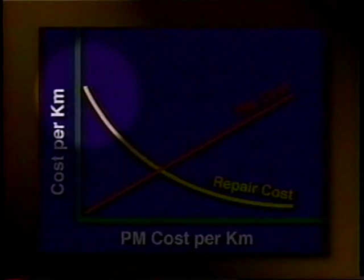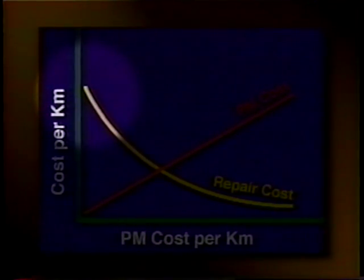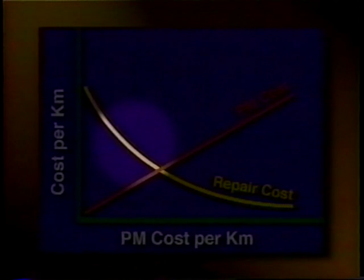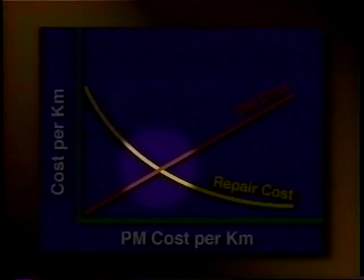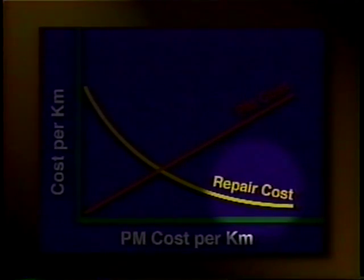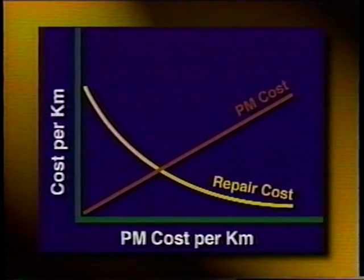This graph shows that a low level of PM will result in high repair costs and high total costs. As the level of effort for PM is increased, repair and total costs decrease. However, there is a point at which additional increases in PM effort have little effect on repair costs. After this point, total cost will increase because of the high cost of PM. The ideal level of PM is the point at which total cost is minimized.